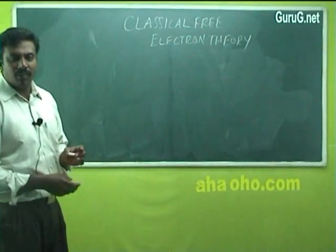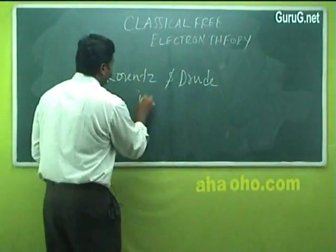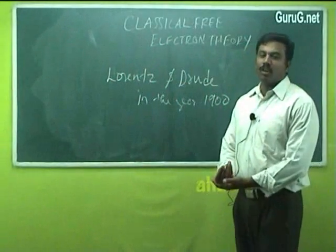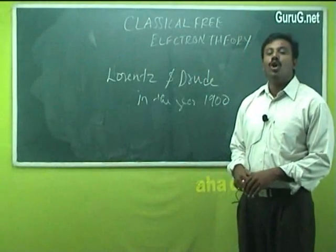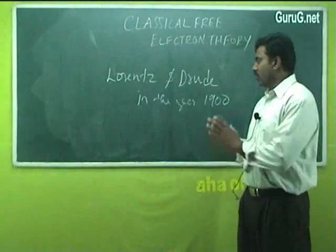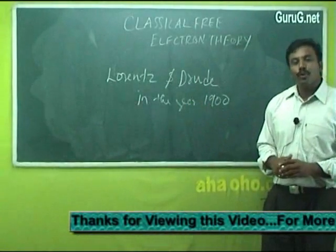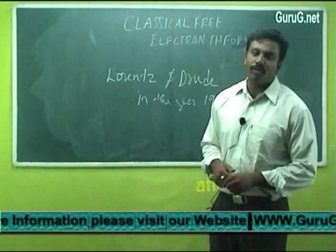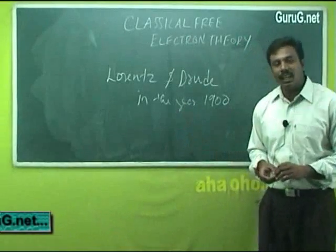Classical free electron theory was proposed by Lorentz and Drude in the year 1900, after the discovery of electrons. They took an attempt to explain the thermal conductivity and the electrical conductivity of metals based on certain free electrons present inside the metal. That is why this theory is called the classical free electron theory.